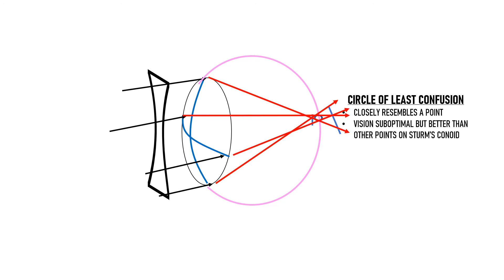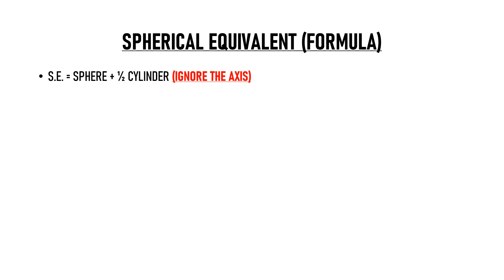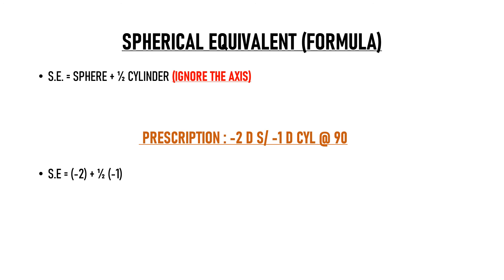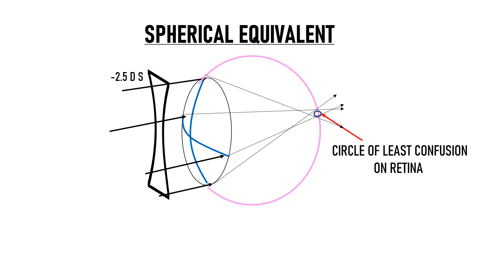The smaller the circle of least confusion, the more it resembles a point image and the better the visual acuity. The formula for calculating spherical equivalent is: spherical power plus half of cylindrical power. In our example, that is minus 2 plus half of minus 1, which equals minus 2 minus 0.5, or minus 2.5. So the spherical equivalent is minus 2.5. Giving this patient a sphere of minus 2.5 diopters places the circle of least confusion on the retina for the best vision possible when only a spherical lens is available.